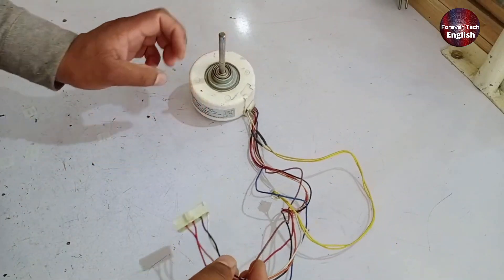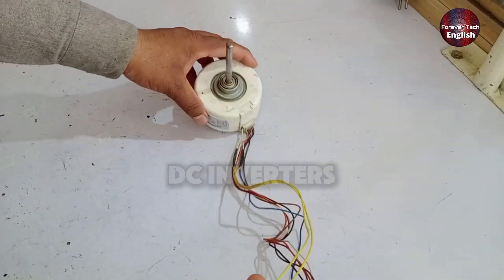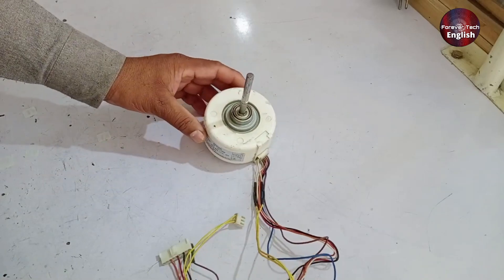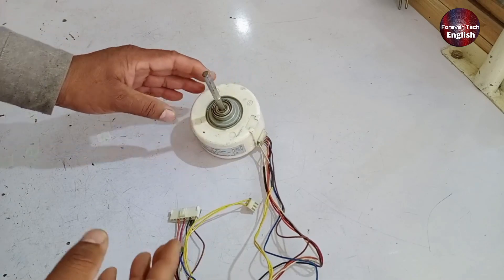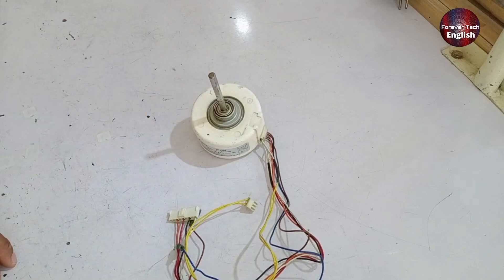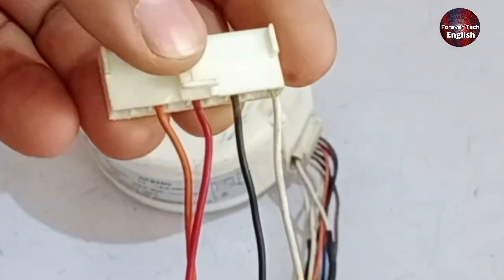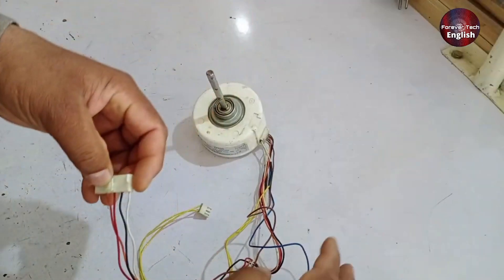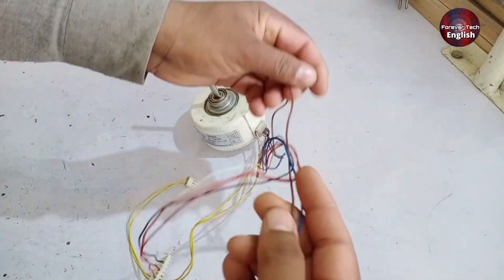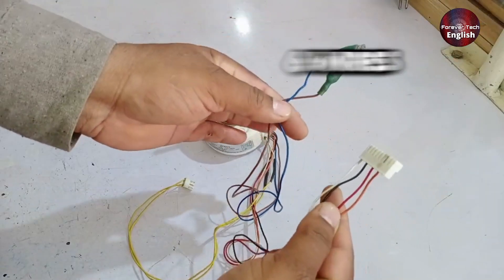I'm going to talk about an eight-wire blower motor, commonly installed in both DC inverters and, more frequently, in non-DC inverters. I'll give you all the information you need about this motor. You may notice that there are four wires present in the connector, but in addition to that, there are two more wires, making a total of six wires.